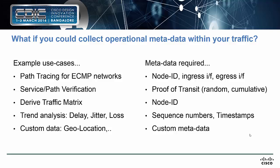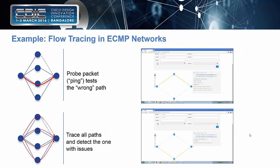With in-band OAM we could do path tracing for ECMP — diagnosing all paths in the network as opposed to only one. We could do service path verification as just discussed, derive the IPv6 traffic matrix, do trend analysis on delay, jitter, and loss in the network, and even embed crazy information like GPS geolocation for mobile networks of mobile routers. The metadata we'd need to carry includes: node ID, ingress interface, egress interface for ECMP use cases, proof-of-transit information (the cumulative and random numbers), sequence numbers, timestamps, and a completely custom field.